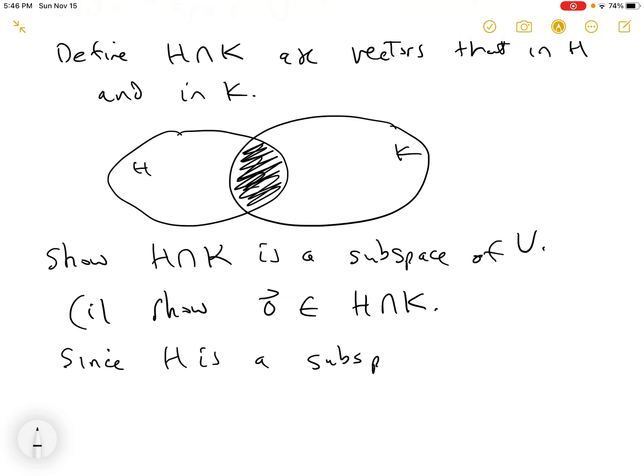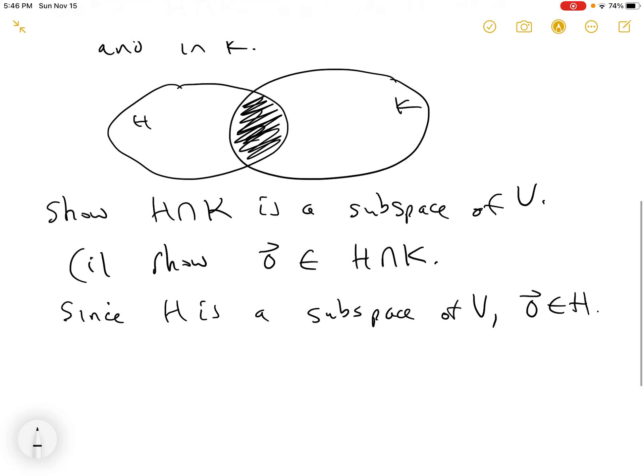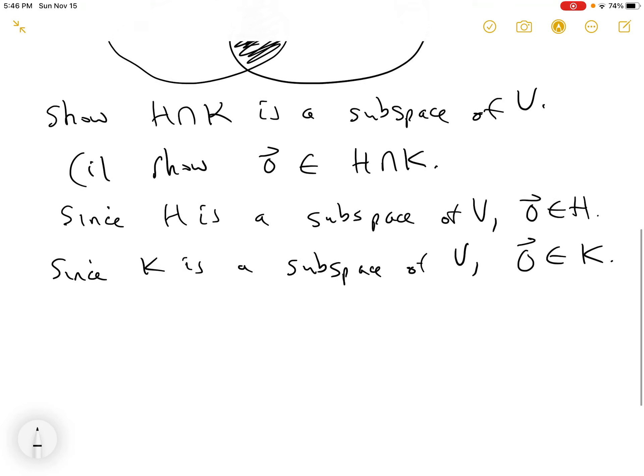Since H is a subspace of V, the zero vector is in H because that's by definition. We already know H is a subspace by hypothesis, so the zero vector must be in H. And since K is a subspace of V, zero is in K. Well, zero is in H and zero is in K, so this implies that the zero vector is in H intersect K. Check.